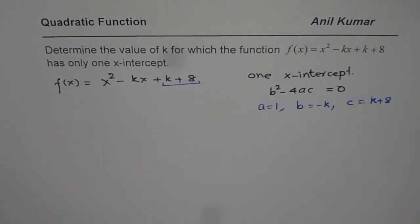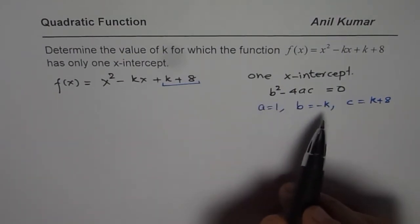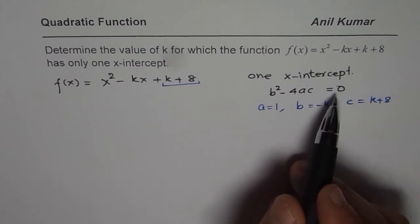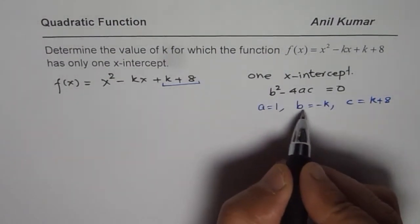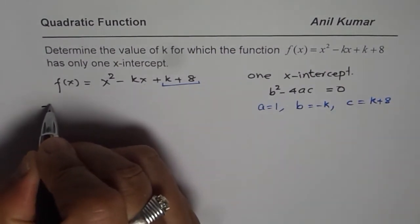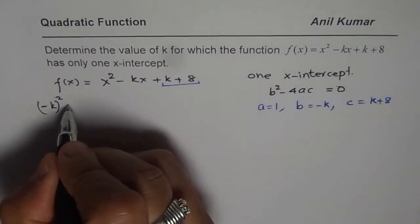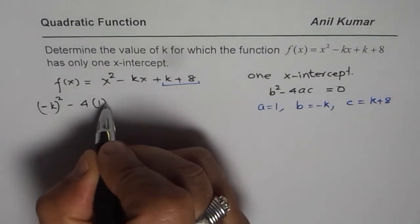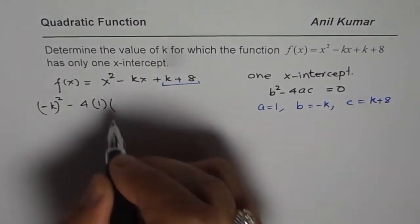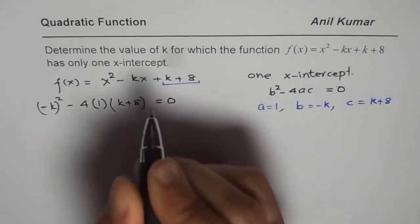Now we can apply the formula b² - 4ac and find which value of k gives us 0. Applying b² - 4ac: b is -k, so we write (-k)², minus 4 times a (which is 1) times c (which is k + 8). That should equal 0.